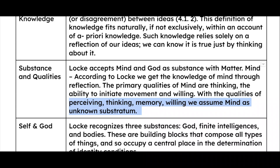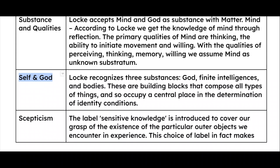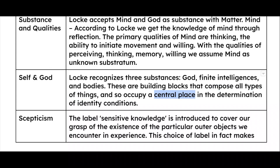Now let's talk about self and God. Locke recognized three substances: God, finite intelligence, and bodies. These are the building blocks that compose all types of things, and they occupy a central place in the determination of identity conditions. So self and God are among the three substances — they are the creators, and all things are composed of these, occupying a central place in determining the identity of things in this universe.